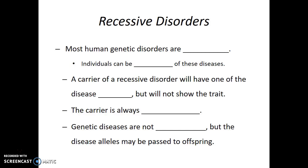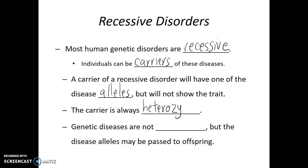Most human genetic disorders are recessive, meaning that it takes two copies of the recessive allele in order to show the trait, and individuals can be carriers of these diseases. A carrier of a recessive disorder will have one of the disease alleles, but they will not show the trait. The carrier is always heterozygous. Likely, the carrier has no idea that they actually are a carrier for this particular trait, because they do not show any of the symptoms.